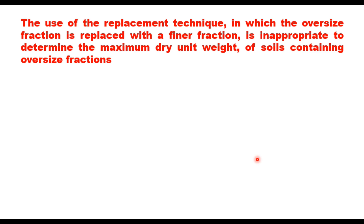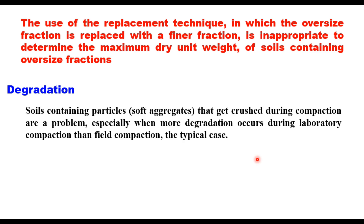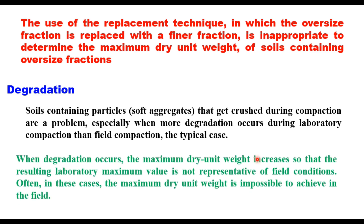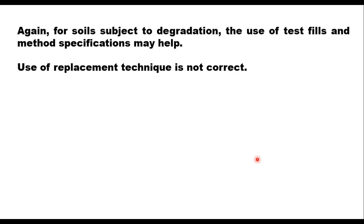The second problematic soil type is soil containing soft aggregates that get crushed during compaction. This is a problem especially when more degradation occurs during laboratory compaction than in field compaction, which is generally the typical case. When degradation occurs, the maximum dry unit weight increases such that the laboratory maximum value is not representative of field conditions, and often the maximum dry unit weight is impossible to achieve in the field. For soils subject to degradation, use of test fills and method specifications may help, but the replacement technique is not appropriate.